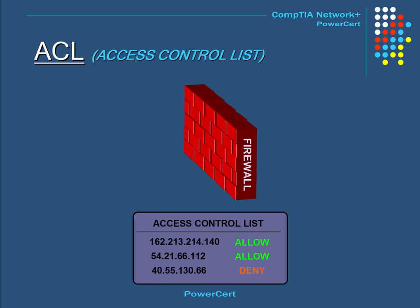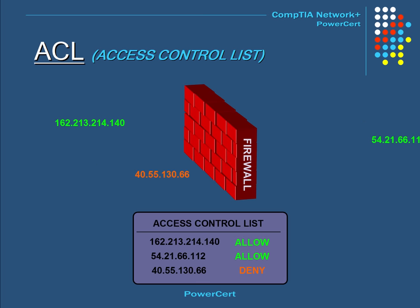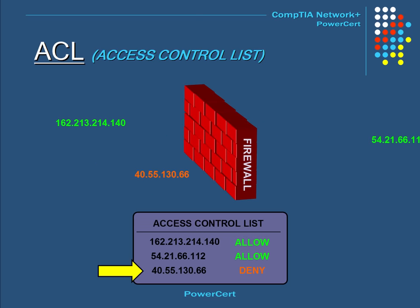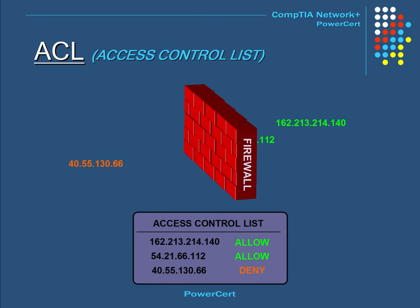One way a firewall controls the flow of traffic is through its Access Control List, or ACL. The ACL is a list of rules on what can access the network — it either allows or denies permission. For example, here we have a simplified ACL with a list of IP addresses that have been allowed or denied. If a denied IP address tries to get in, the firewall will deny it based on the rules set in the ACL.